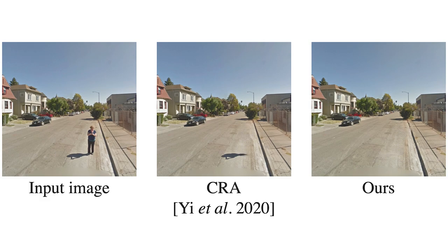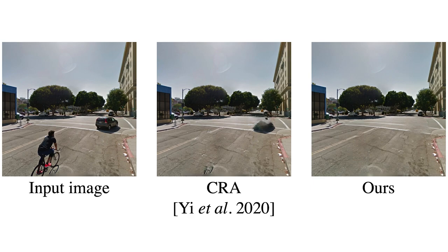We first show results on object removal. The traditional inpainting method CRA only inpaints the area within the mask and has leftover shadows. Our method removes objects completely along with the shadows.